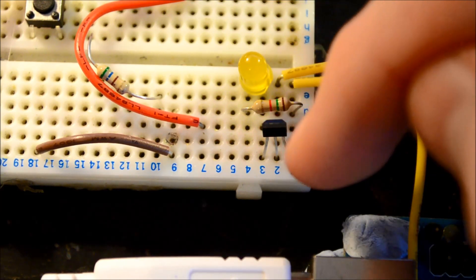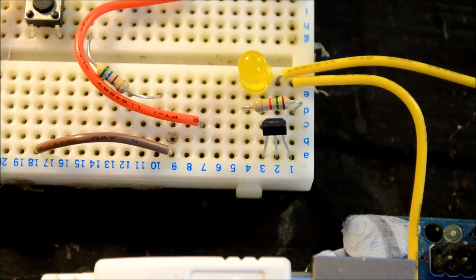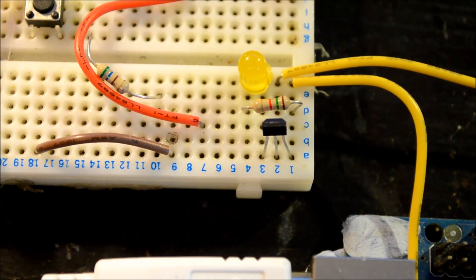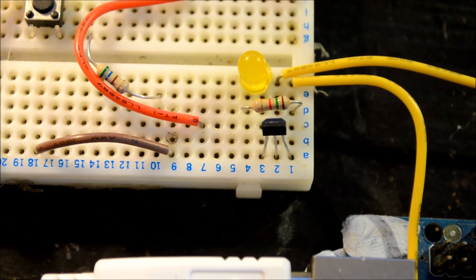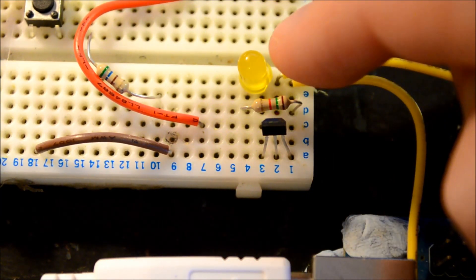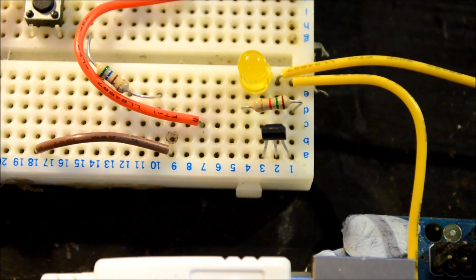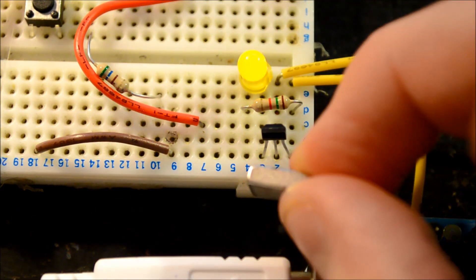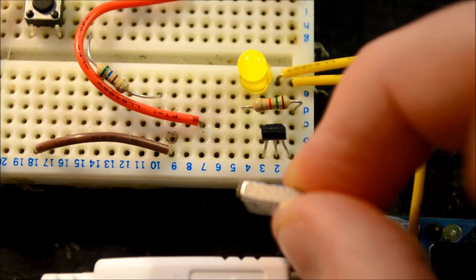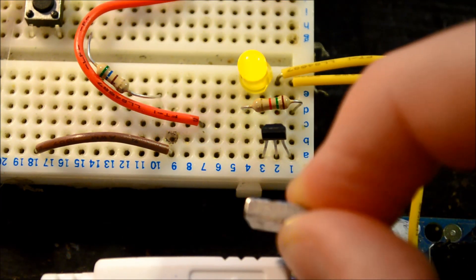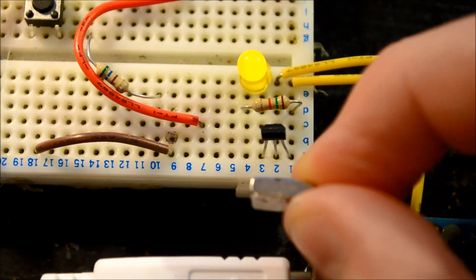You can see, when a magnet is put the right way around, near the switch, it will drop the output to ground, therefore allowing the current to flow from the negative side of the LED through it to ground. Simple as that.